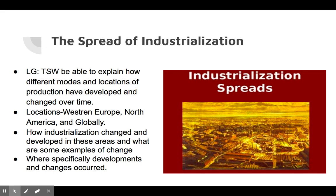We also reviewed the assignment on the spread of industrialization. Your learning goal was to explain how different modes and locations of production have developed and changed over time. We did a comparison between Western Europe and North America on how industrialization spread in those two areas, and then how it ultimately ended up spreading globally, along with what some of those examples of change were.